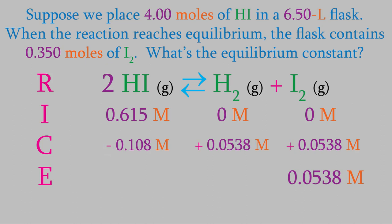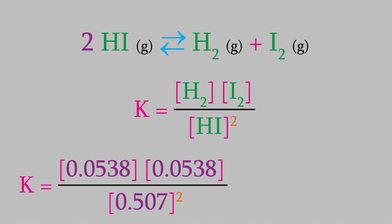And now we can calculate the equilibrium concentrations. The HI is 0.507 molar, and the hydrogen concentration is 0.0538. So, now we know all the equilibrium concentrations, and that means we can finally determine K. When we perform that calculation, we find that K equals 0.0112.